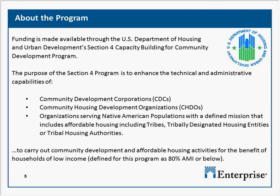This includes tribes, tribally designated housing entities, or tribal housing authorities. Section 4 grant funds are used to build their capacity to carry out community development and affordable housing activities for the benefit of households with low income, which for the purposes of this program are defined as 80% AMI or below.